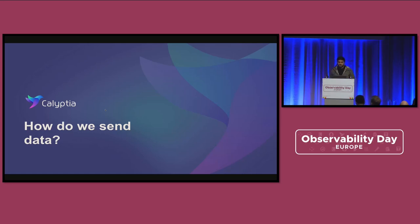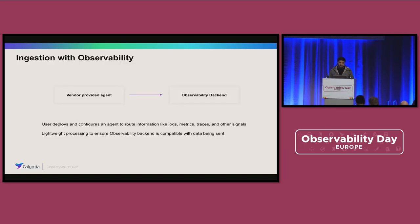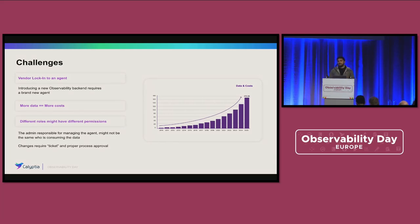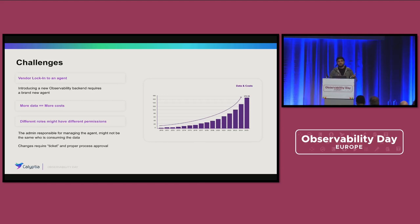With telemetry pipelines, the first question I like to start with is: how have we sent data? How do we ingest data, collect it, and route it to where it needs to go? About 10 years ago, it really started with a vendor-provided agent and an observability backend. If you're sending data to XYZ, the vendor provides an agent, it collects that data, and routes it wherever it needs to go. The challenge is we're getting locked into that agent — collecting a ton of data that's only useful for that particular backend, with high costs and restricted permissions for making changes. It's not as flexible as we'd all like.